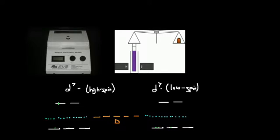Welcome back to electronic structure and bonding in inorganic chemistry. My name is Kevin Telkoff. In this video we're going to talk about two things: diamagnetism and paramagnetism, and then we're going to introduce something called magnetic or molar susceptibility.